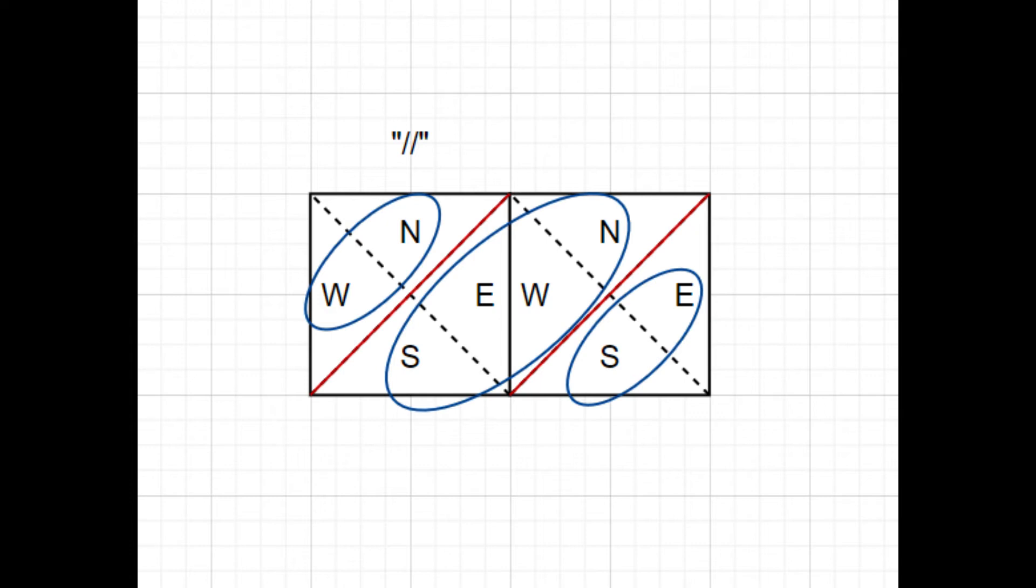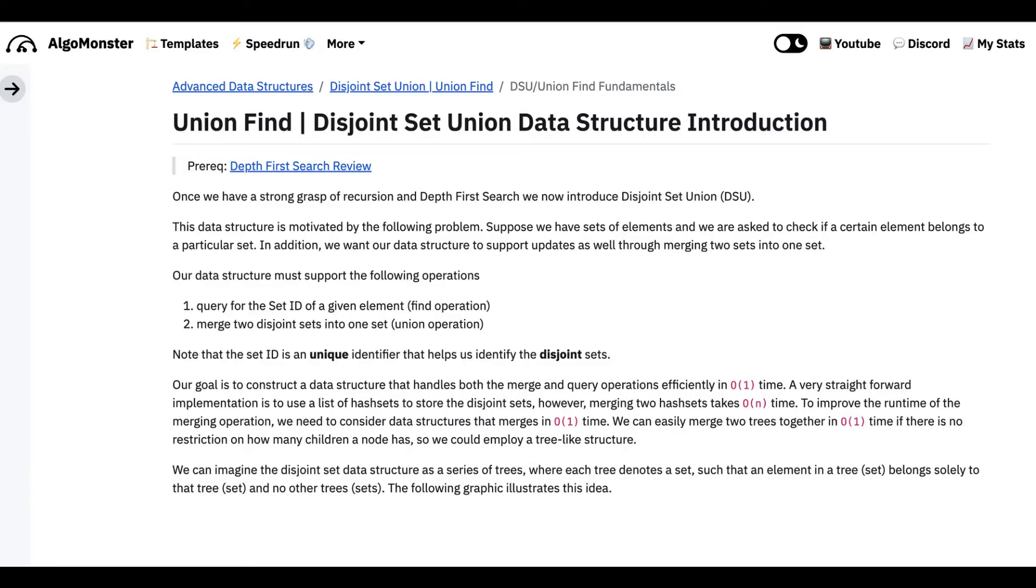To accomplish this, the best way is to use the UnionFind method. UnionFind data structure keeps track of the number of connected regions. If you are not familiar with UnionFind, check out the link in the description to learn about how it works and the standard template to implement UnionFind.